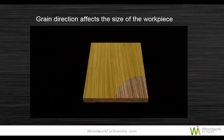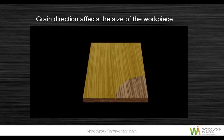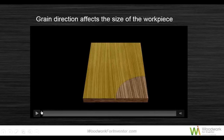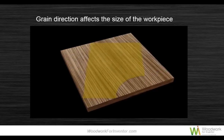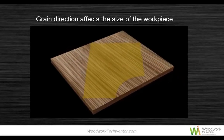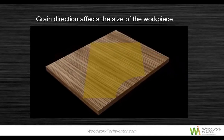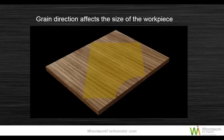Another interesting area was the problem of grain direction. Where we have a model where we rotate the texture, the size of the workpiece needs to increase to suit. It's quite difficult to get the bounding box reported with standard Inventor without additional tools or programming. When customers want this extra information, how would they adjust the texture and extract that information?